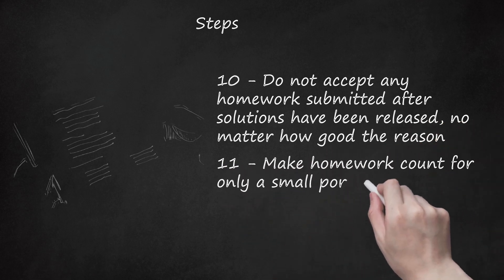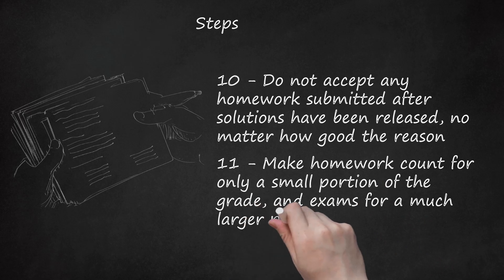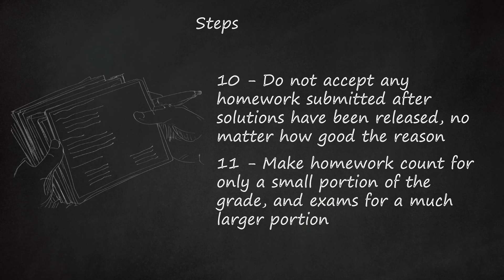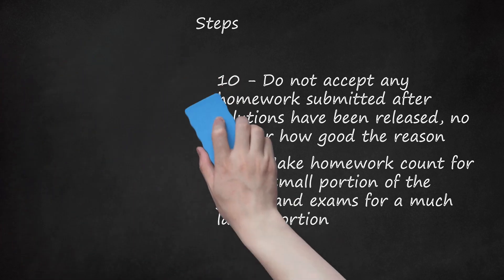Step 11: Make homework count for only a small portion of the grade and exams for a much larger portion. Making homework count for only roughly 10% of the grade is typically enough to ensure that students do the assignments. In addition, if you grade the assignments based more on effort than accuracy, this will provide students with little incentive to cheat on homework. Most cheating on homework is in the form of excessive collaboration or searching for answers on the internet. If you use this type of weighting and thoughtfully construct your exams, the exams will enforce the no-cheating policy for homework better than you can. The students who choose to cheat will likely have their grades lowered as a result of poor performance on exams.